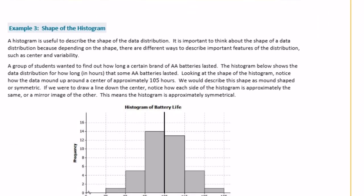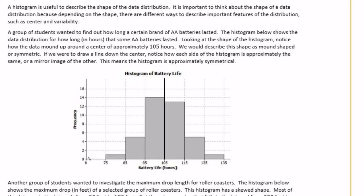Example three: shape of a histogram. A histogram is useful for describing the shape of a data distribution. Depending on the shape, there are different ways to describe center and variability. Looking at a histogram of double-A battery life, the data mounds up around 105 hours in the center — this is described as mound-shaped or symmetric. If you draw a line down the center, each side is approximately a mirror image of the other.